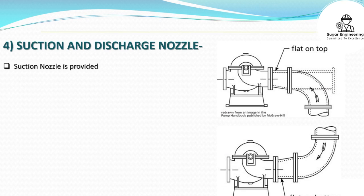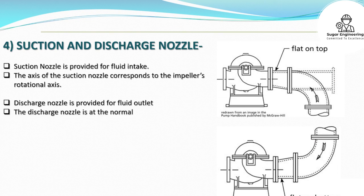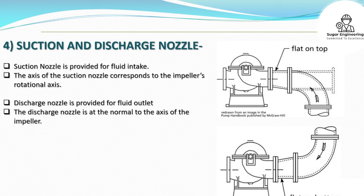Suction and discharge nozzles: The suction nozzle is provided for fluid intake, and its axis corresponds to the impeller's rotational axis. The discharge nozzle is provided for fluid outlet and is oriented normal to the axis of the impeller.